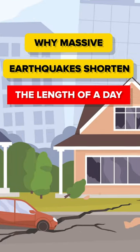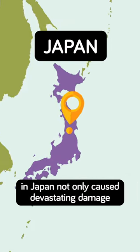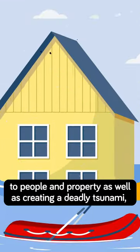Here's why massive earthquakes can shorten the length of a day. In March 2011, the 9.0 magnitude Tohoku earthquake in Japan not only caused devastating damage to people and property, but also created a deadly tsunami.